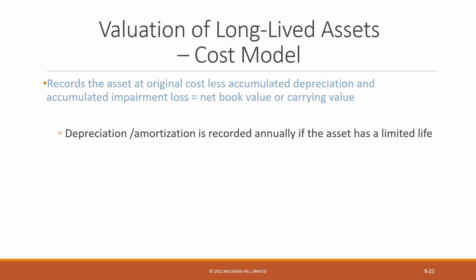Under the cost model, depreciation — which is what it's called for tangible assets — or amortization, which is the wording we use for intangible assets, is recorded annually when the asset has a limited life. Examples of tangible assets would be a building or equipment, and intangible assets would be, for instance, a patent. Note that long-lived assets with indefinite lives, such as land or trade names, are not depreciated or amortized.